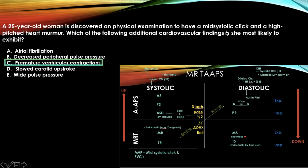The next question involves mitral valve prolapse identified by the mid-systolic click. Premature ventricular contractions are associated with mitral valve prolapse and is the correct answer choice.